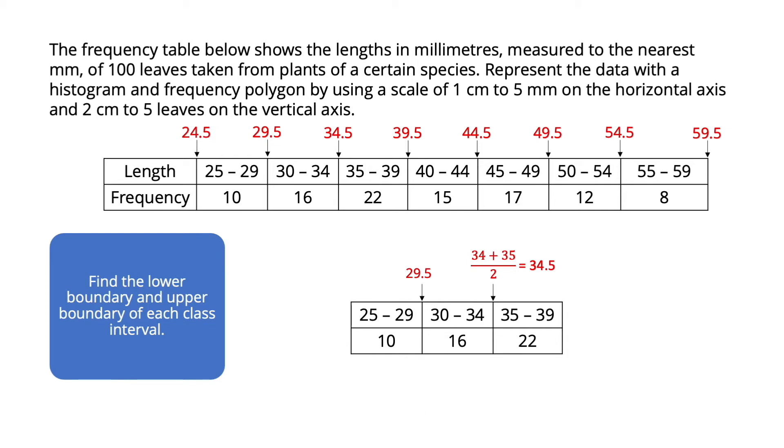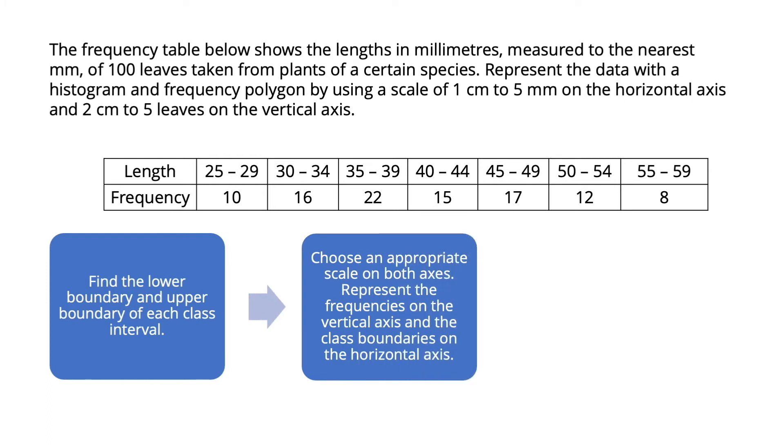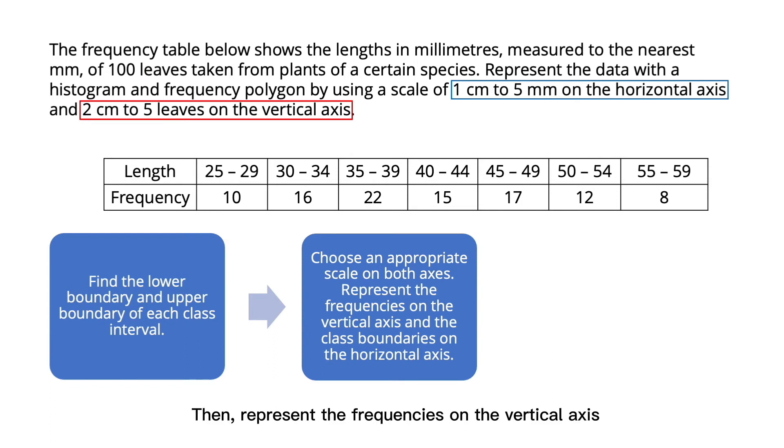Step 2: choose an appropriate scale on both axes. The scale for this question has been mentioned. There is 1 cm to represent 5 mm on the horizontal axis and 2 cm to represent 5 leaves on the vertical axis. Then, represent the frequency on the vertical axis and the class boundary on the horizontal axis.